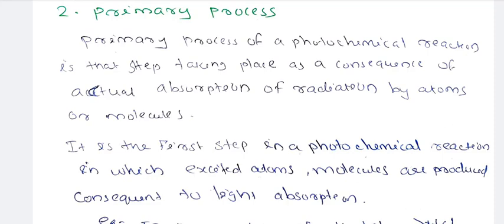In which excited atoms or molecules are produced consequent to light absorption. In this process, the light is absorbed by atoms and molecules which become excited. This is the primary process.